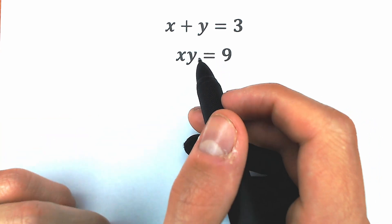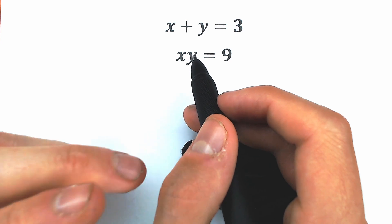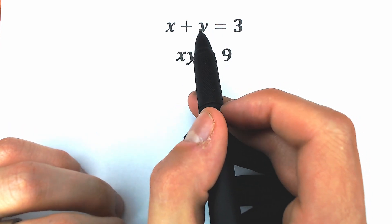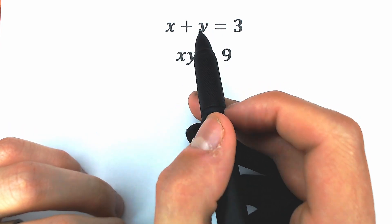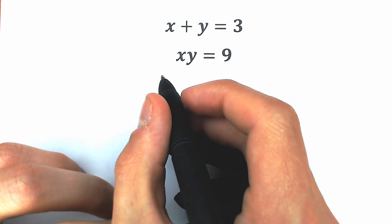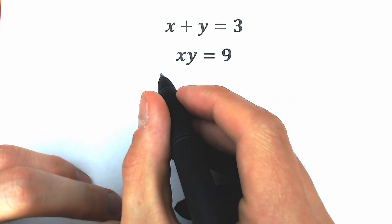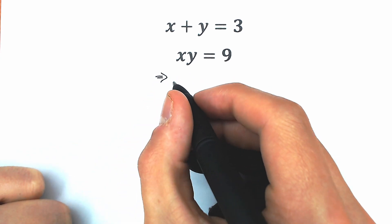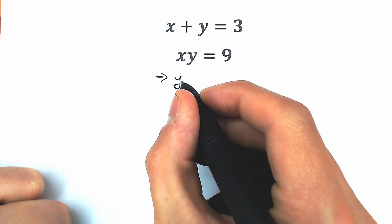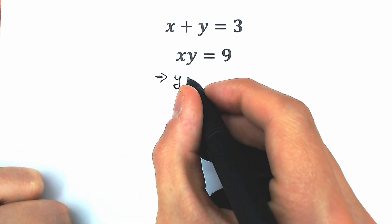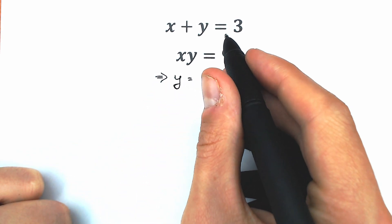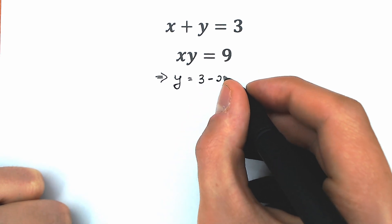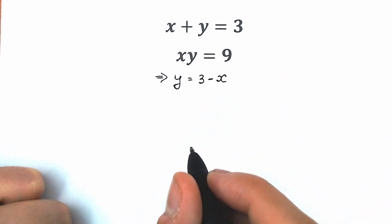So first of all, how can you solve this type of equation? Basically, we need to express, for example with the first one, let's express our y. So our first step: let's express y from the first equation. y equals 3 minus x.